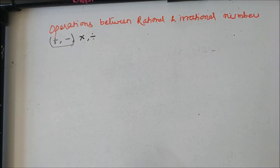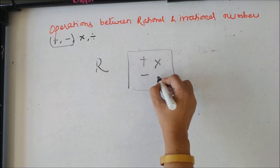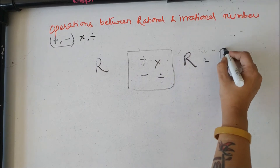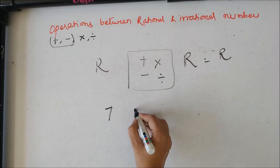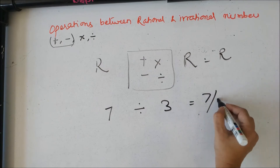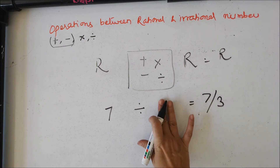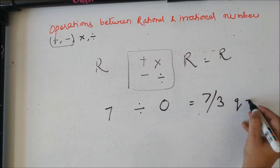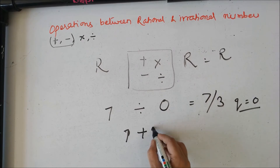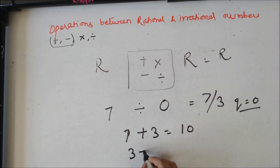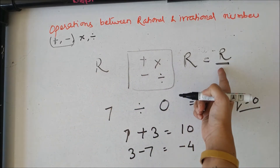One more thing: whenever I do any mathematical operation between two rational numbers — whether I add, subtract, multiply, or divide — the answer is always a rational number, except it should not be divided by 0, because Q cannot be 0. For example, 7 divided by 3 is 7 upon 3, which is a rational number. Rational with rational will always be rational.